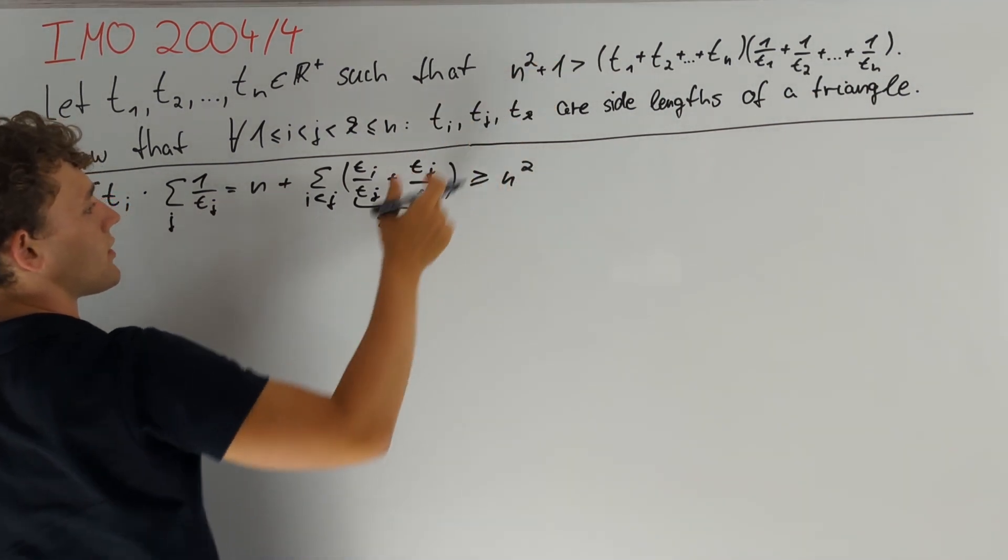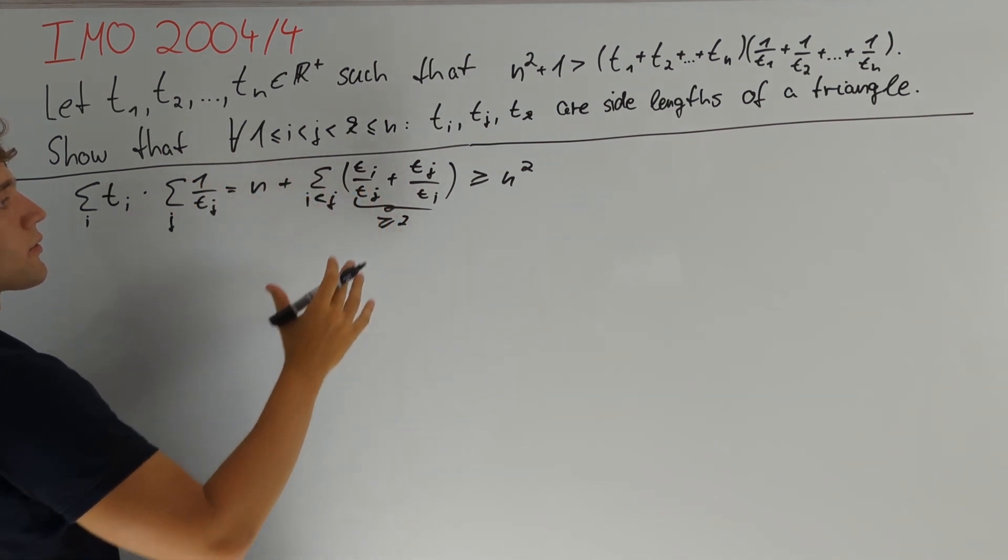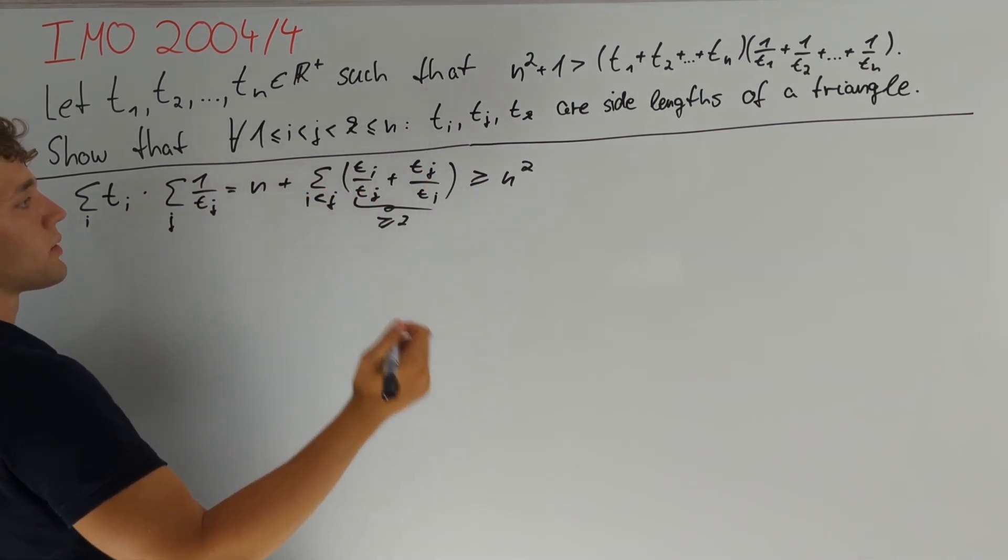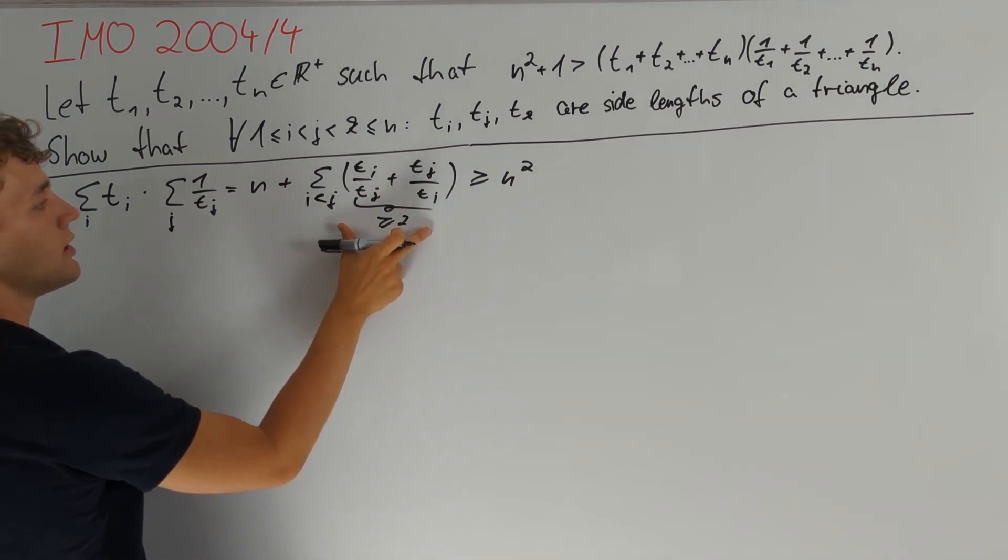We have given that n² + 1 is larger than this term. Therefore, it is not that far away from its lower bound. So we might want to take a look at the equality case, which we have if we have equality here always.